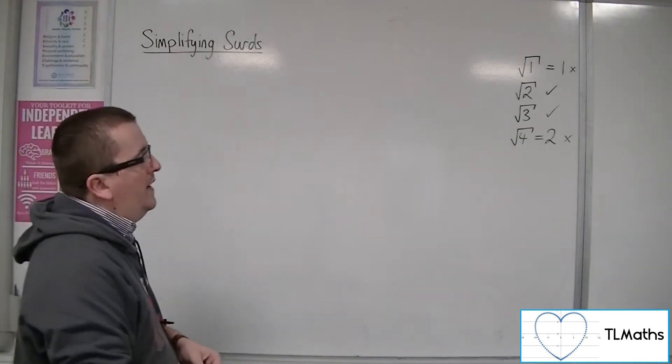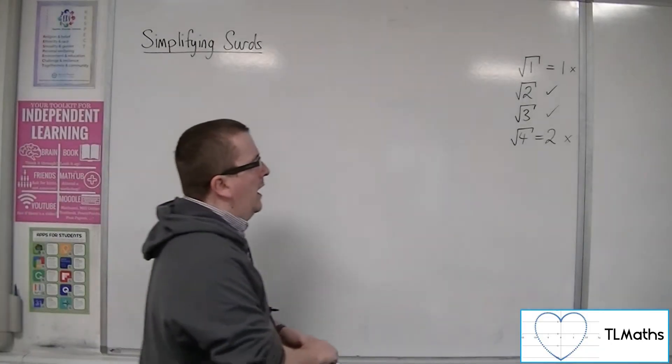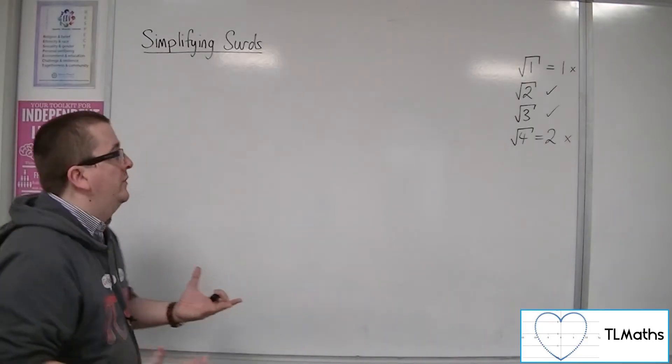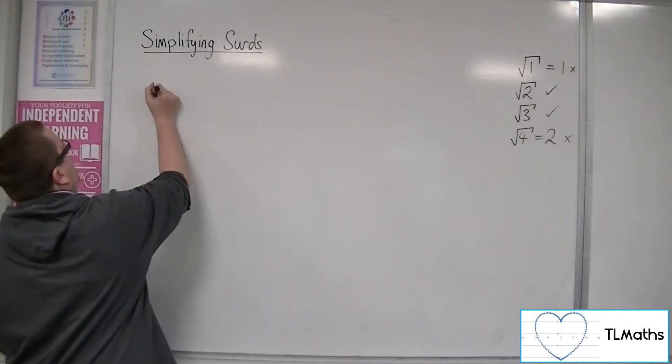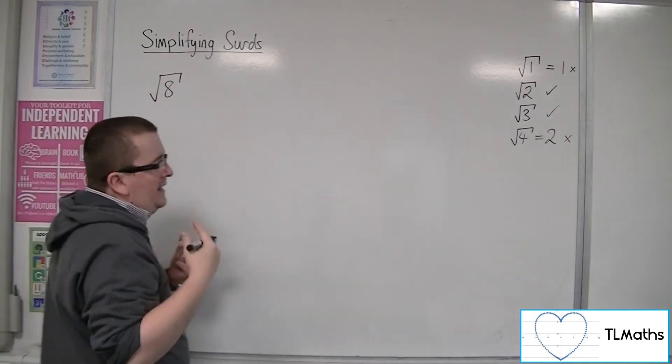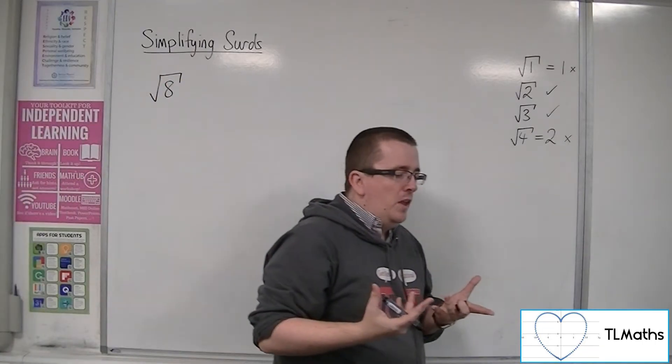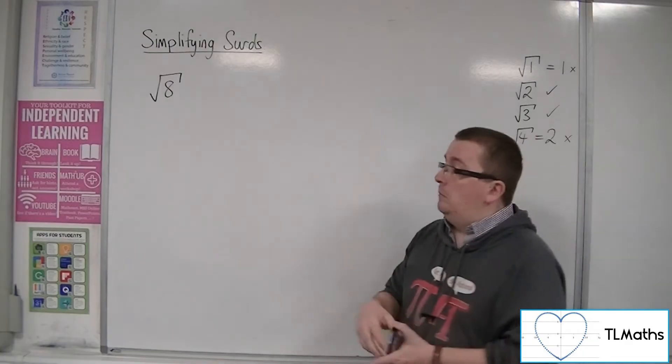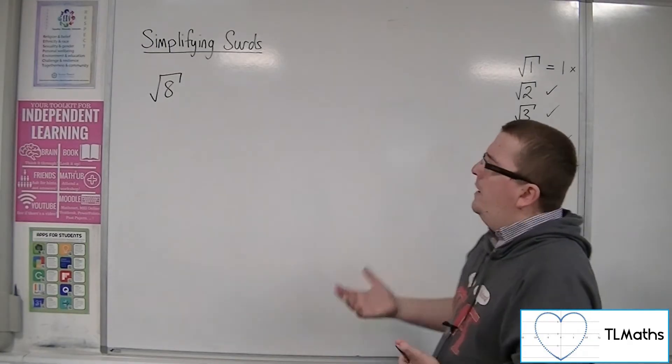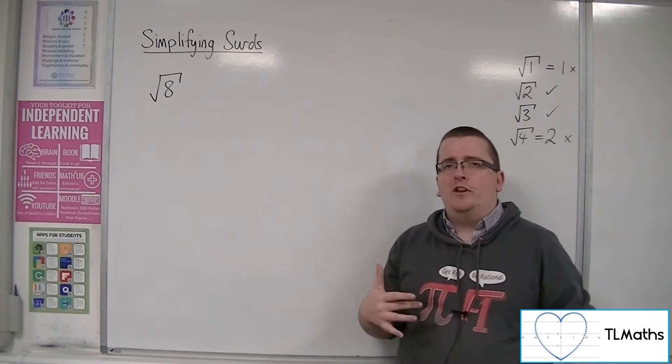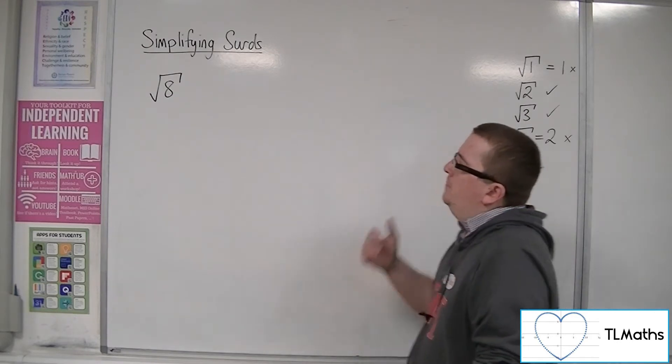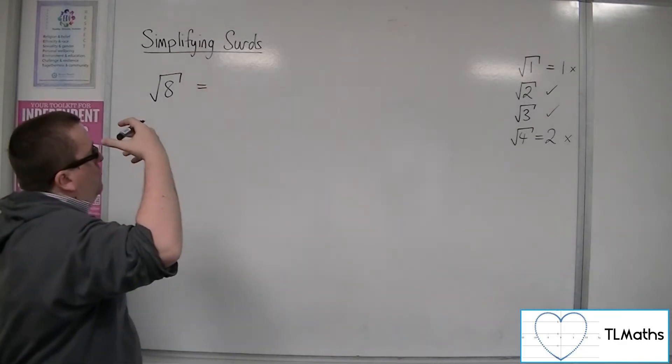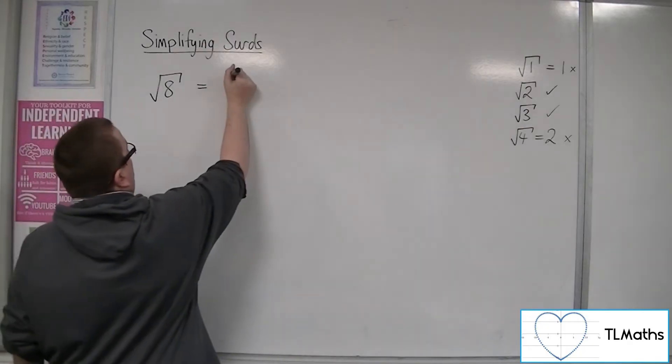So let's say I eventually get to something like root 8. And we start to have a look at root 8 and we think, well, I definitely can't write that as a whole number, because 8 is not a square number. But I can use my indices knowledge in order to simplify it, because remember that root 8, the square root of 8, is just 8 to the power of a half.